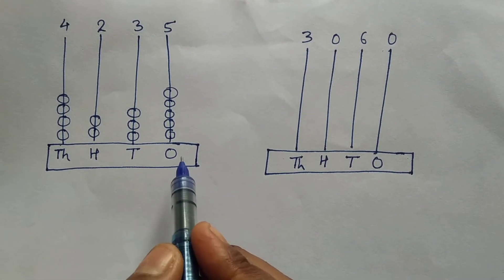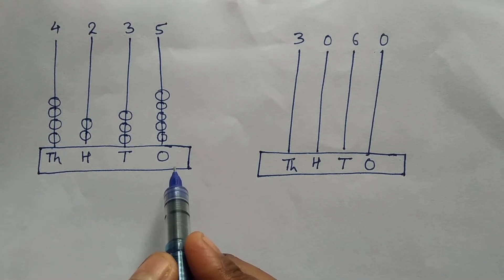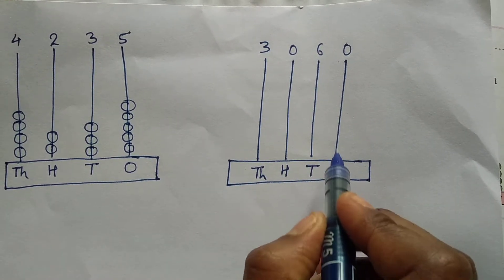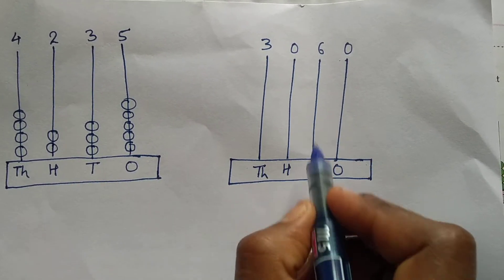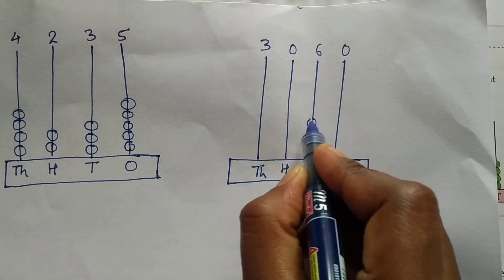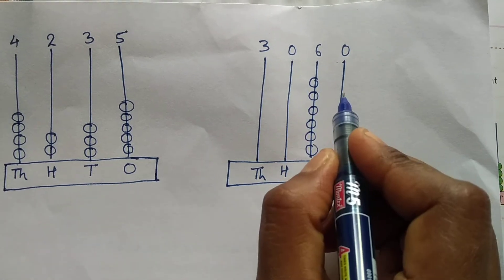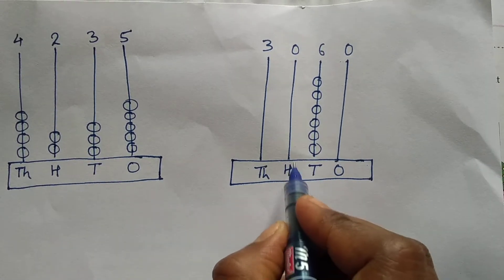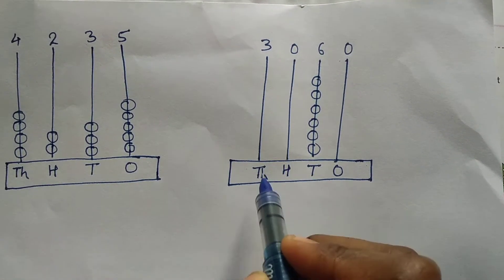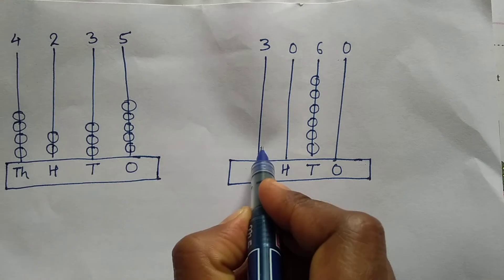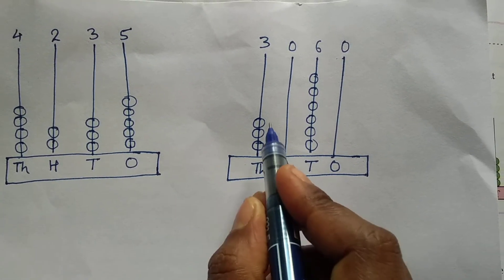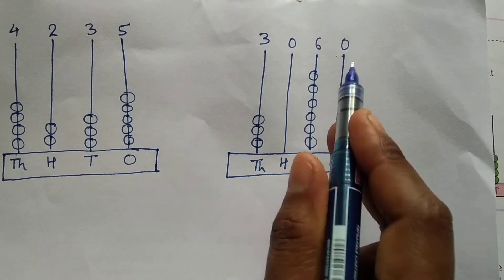If there are no bits in a spike, put 0 in that place. For example, in ones place, no bits means 0. In tens place, there are 6 bits. In hundreds place, no bits — 0 means no bits. In thousands place, there are 3 bits. Now we read it as 3,060.